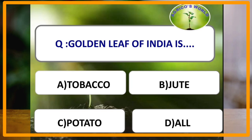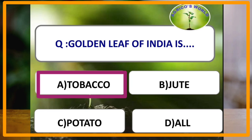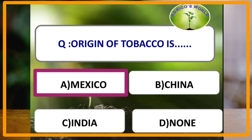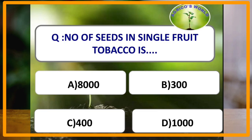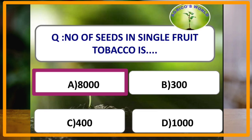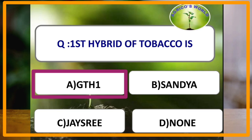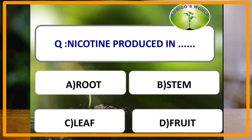Tobacco is known as the golden leaf of India, and jute is known as golden fiber. The origin of tobacco is Mexico, that is central America. The number of seeds in a single fruit is 8,000. The first hybrid of tobacco is GTH-1.